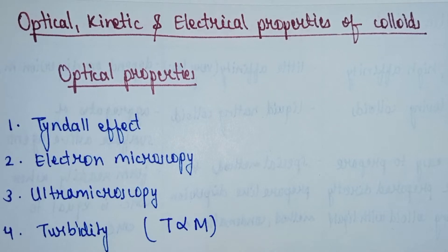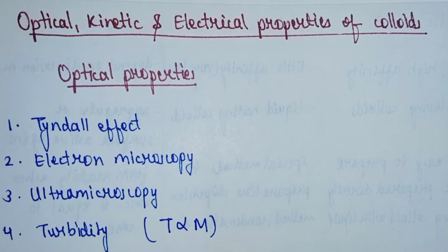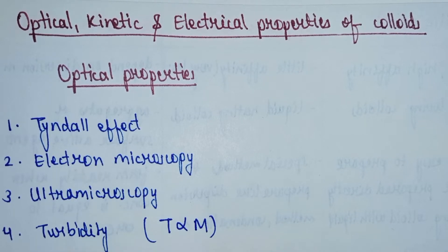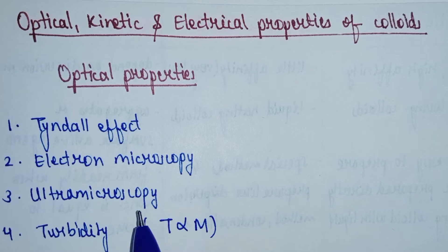What are optical properties? These are the properties that help us determine colloid's size, shape, structure, and molecular weight. The optical properties of colloids are: first, the Tyndall effect; second, electron microscopy; third, ultramicroscopy; and fourth, turbidity.